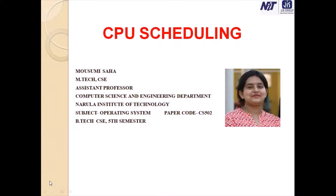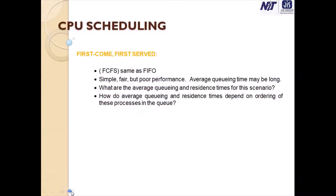We saw there are a couple of scheduling algorithms. The first one is First Come First Serve (FCFS), which is the same as First In First Out. It is very simple but performance is poor — the average queuing time may be long. What is the average queuing and residence time for a given scenario, and how does it depend on the ordering of processes in the queue?